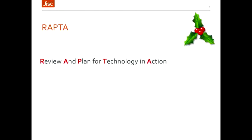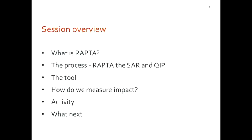The session is predominantly about a tool called Raptor, which stands for Review and Plan for Technology in Action. The session overview is: we're first going to tell you a little bit about what Raptor is and how it fits in with your self-assessment processes and quality improvement planning. Then we're going to show you the tool itself and have a discussion on how we measure impact. Then there's going to be an activity where you will share some good practice with technology in your own organisations. And then we'll be talking about what next.